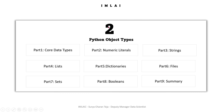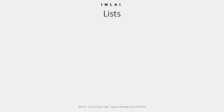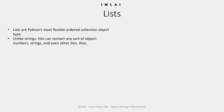Welcome! Now we are going to learn about the most widely used object in Python, that is a list. In reality, lists are Python's most flexible ordered collection object type. The amazing thing about the list is that lists can contain any sort of object — literally any — from numbers, strings, and even other lists, tuples, etc.